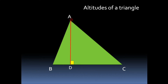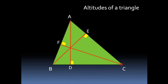So this is the altitude drawn from vertex A. In the same way, we can draw another altitude from vertex B to its opposite side AC. Let BE be the perpendicular drawn from vertex B to its opposite side AC — BE is the second altitude. Similarly, from vertex C, we can draw a perpendicular to its opposite side AB. So CF is the third altitude of the triangle.